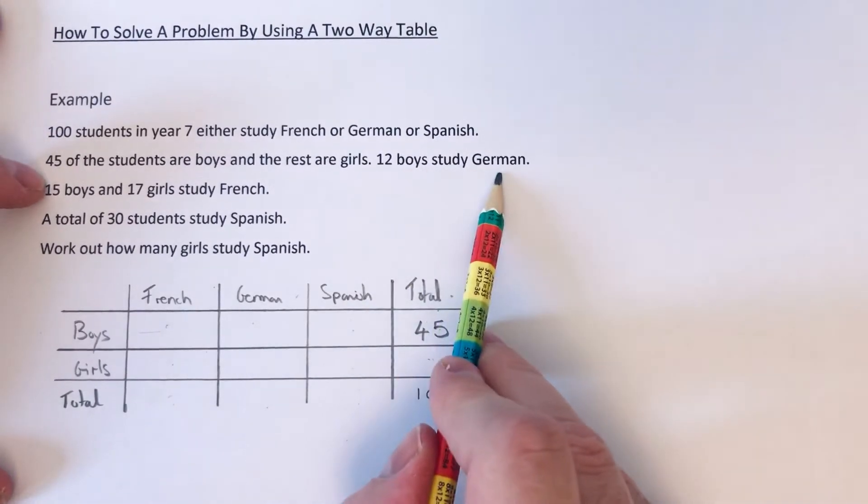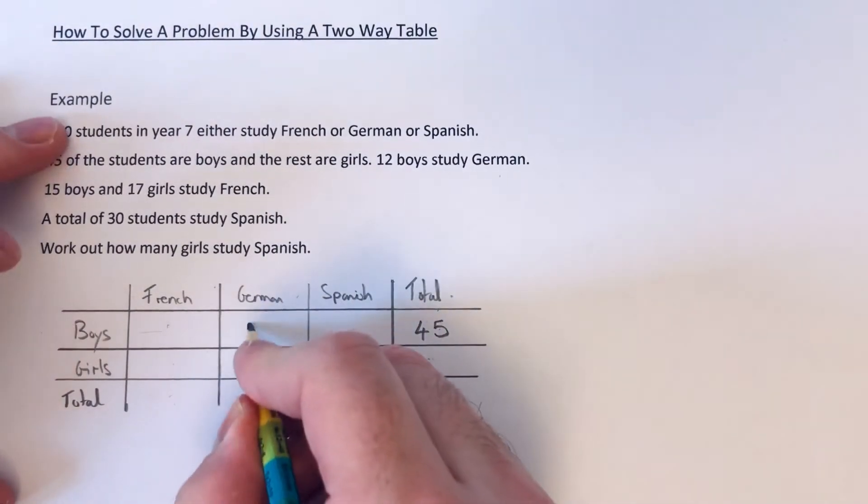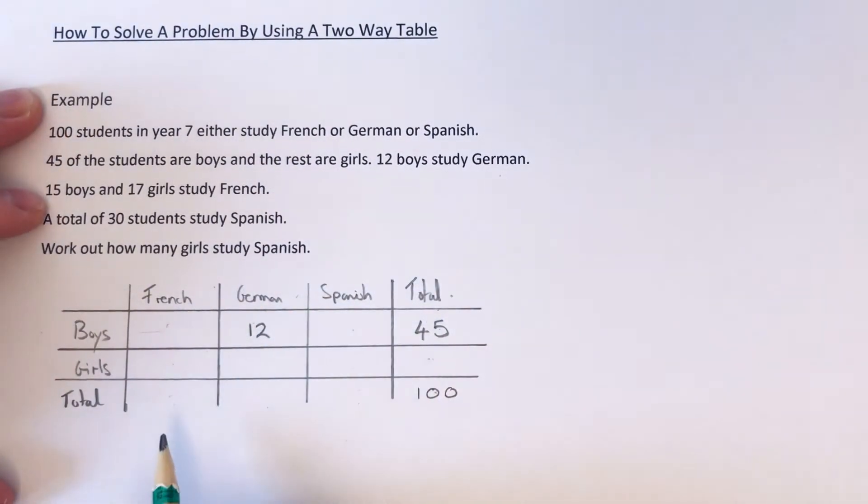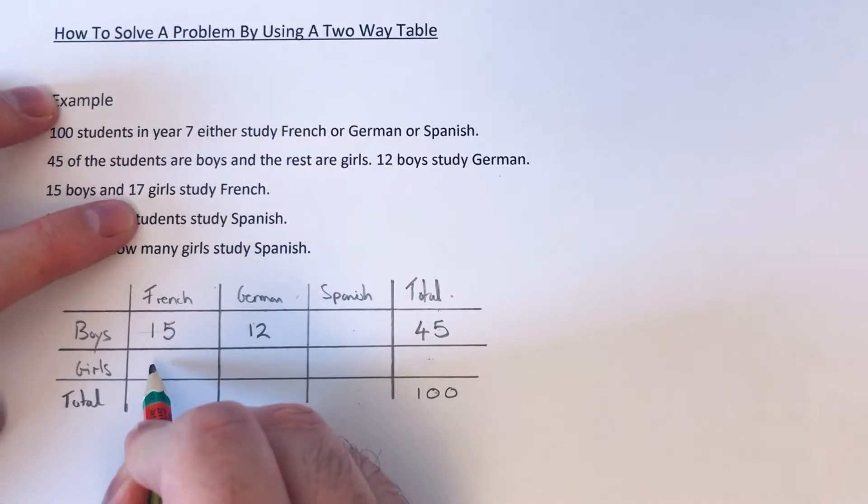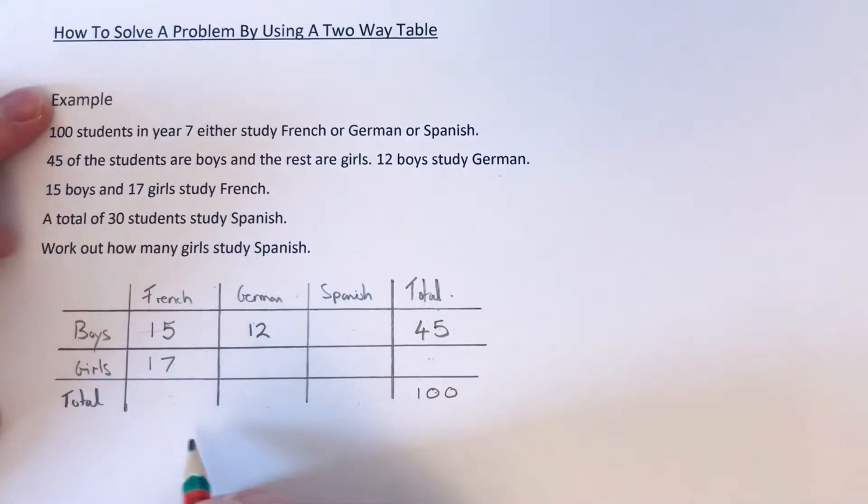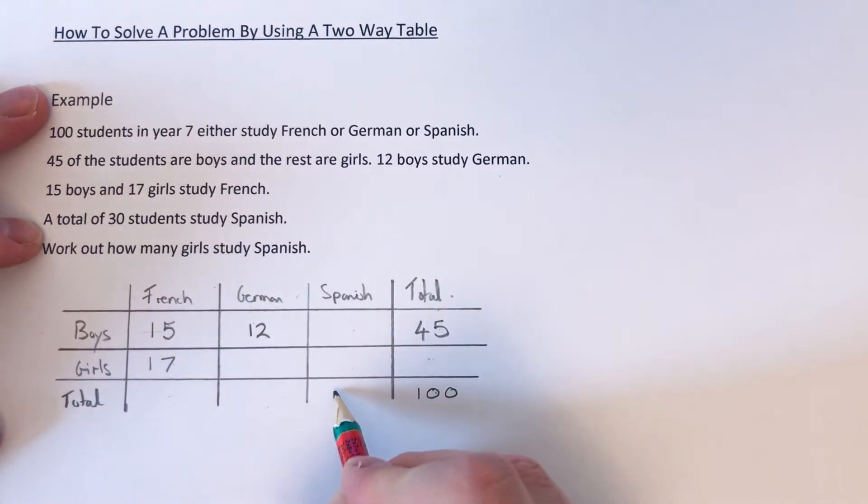12 boys study German, so boys and German, so that's 12 there. 15 boys and 17 girls study French. So we've got 15 boys study French and 17 girls study French. And then we've got a total of 30 students that are Spanish. So that goes there.